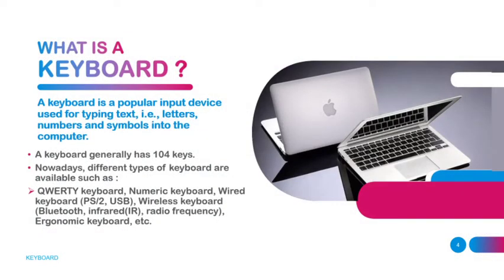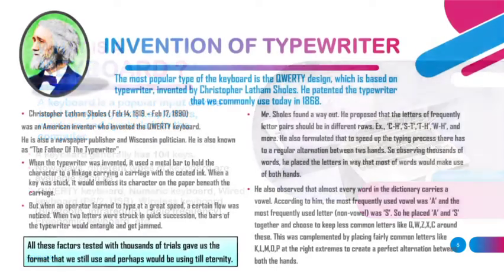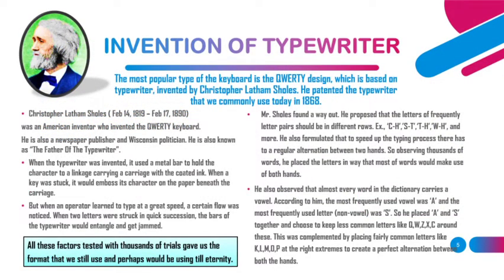So what actually is a keyboard? A keyboard is a popular input device used for typing text — letters, numbers and symbols — into the computer. The general keyboard has 104 keys. Nowadays different types of keyboards are available. The most popular among them is the QWERTY design keyboard, which is based on the typewriter invented by Christopher Latham Schultz. He patented the typewriter that we commonly use today in 1868.